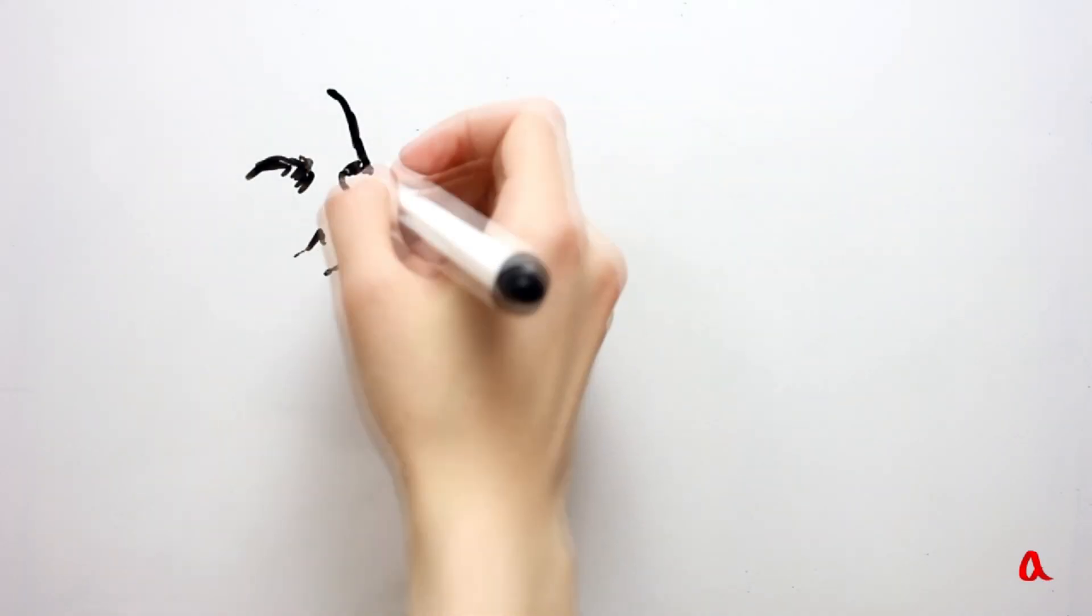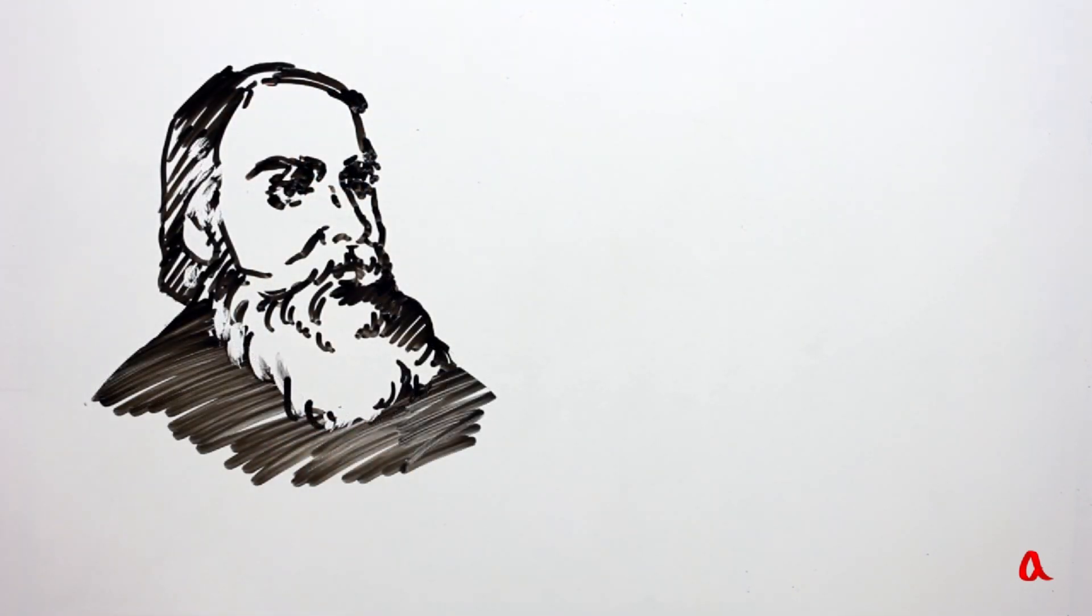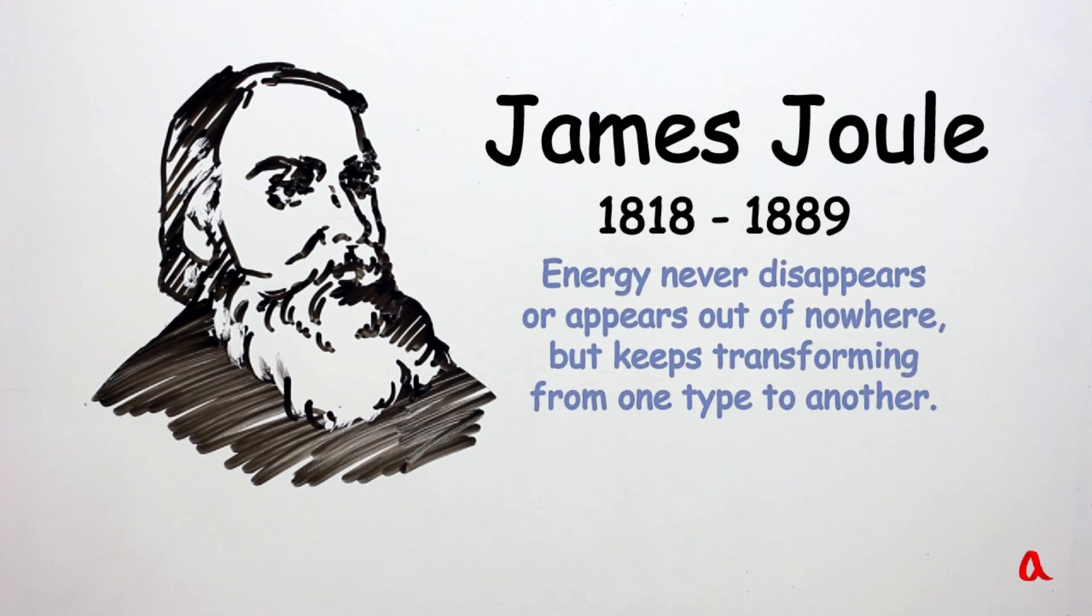This unit is named after a famous English scientist, James Joule. He was one of the discoverers of the energy conservation principle. The principle states that energy never disappears or appears out of nowhere, but keeps transforming from one type to another.